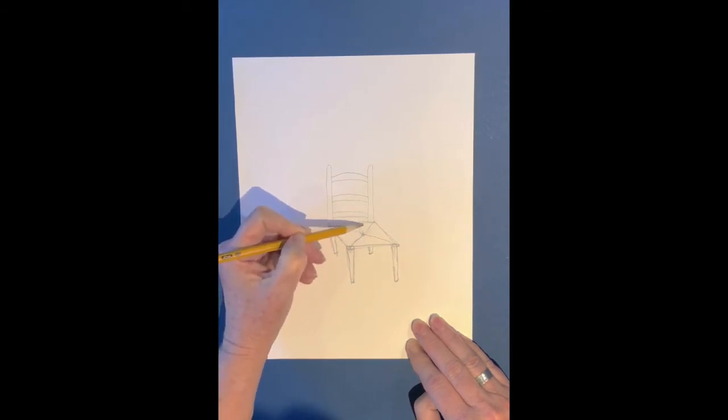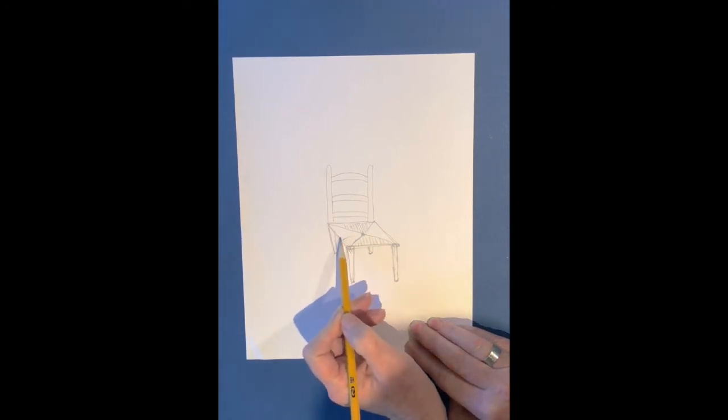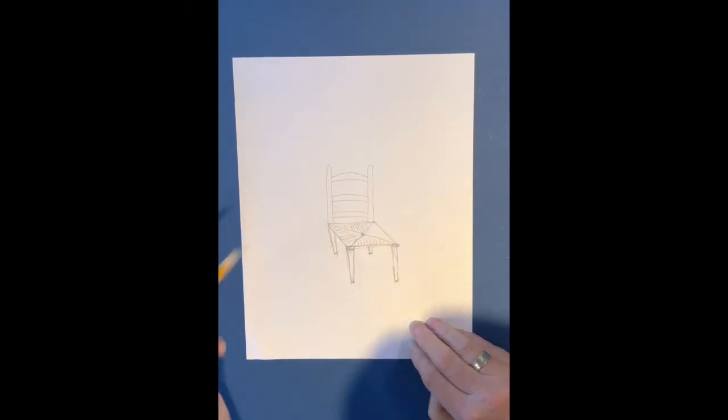So now we can do the texture of the straw seat. And we need to have all the straw going one direction towards the center from the edge in each triangle. You can even make the ends a little bit rounded to show that it rounds around the chair.